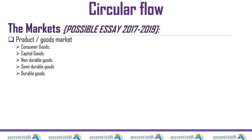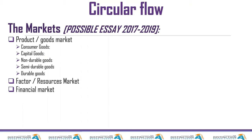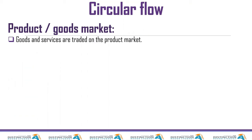First we are going to talk about the product market. According to the exam guidelines, when you are discussing the product market you have to talk about consumer goods, capital goods, non-durable, semi-durable, and durable goods. The next one is the factor market. Then the financial market — in the financial market you need to discuss the money market and the capital market. And then the last one is the foreign exchange market. So let's start with the first one: the product market. Goods and services are traded on the product market — it's a market where goods and services are traded.